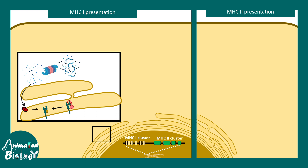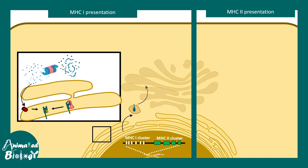Once the peptide fragments enter through the TAP transporter, they get displayed on the surface of the newly formed MHC class 1 molecule. From the endoplasmic reticulum, using anterograde transport machinery, the complex moves to the Golgi apparatus where it receives modifications, and then via vesicle trafficking it is ultimately displayed on the cell surface.